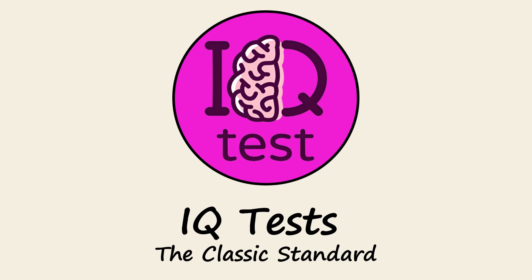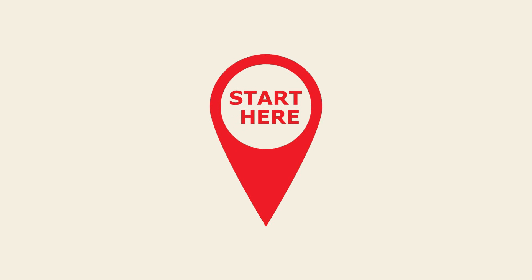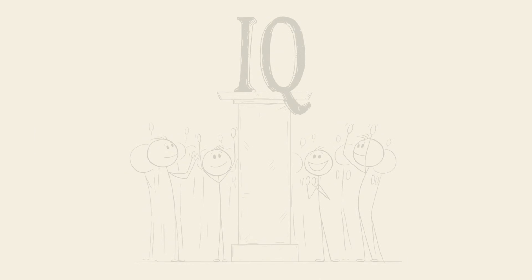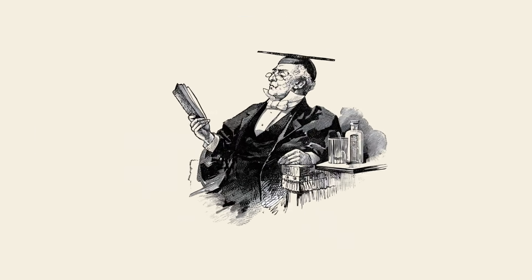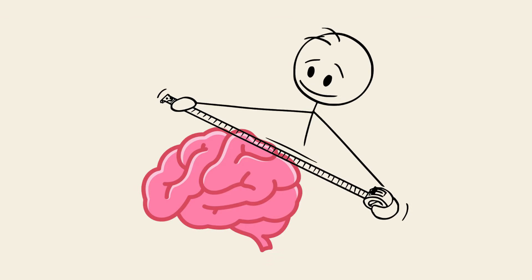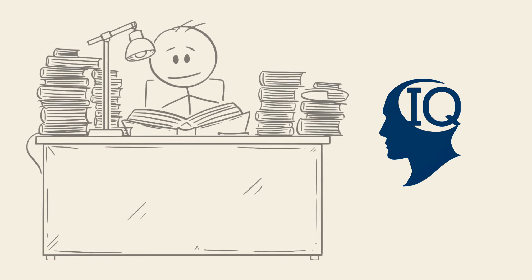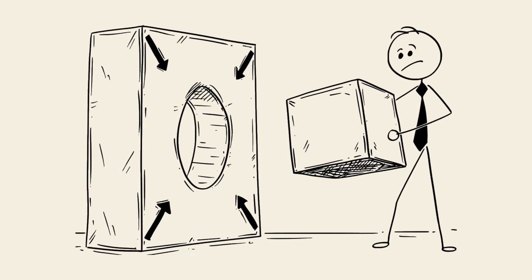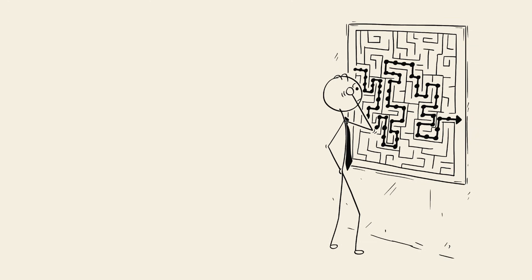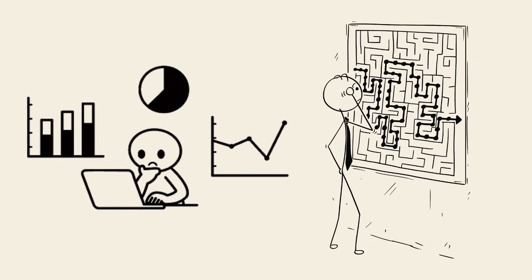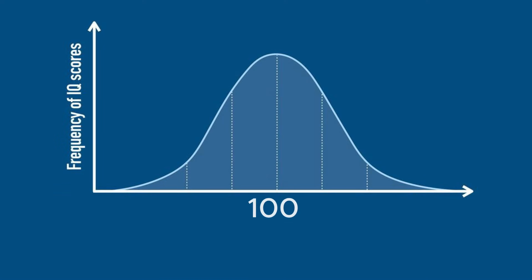IQ tests. The classic standard. We have to start here. The intelligence quotient, or IQ test. Developed over a century ago, it's the most famous and widely used method for measuring intelligence. But here's what most people get wrong. IQ doesn't measure how much you know. It measures how well you solve problems, recognize patterns, and process information quickly. Scored on a bell curve, 100 is average.